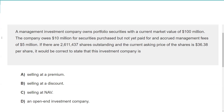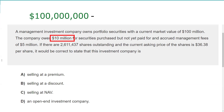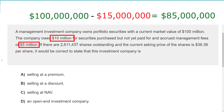Let's calculate the NAV. We have $100 million in securities. We have liabilities of $10 million for unpaid securities and another $5 million in unpaid management fees — total liabilities of $15 million. So we have net assets of $85 million.